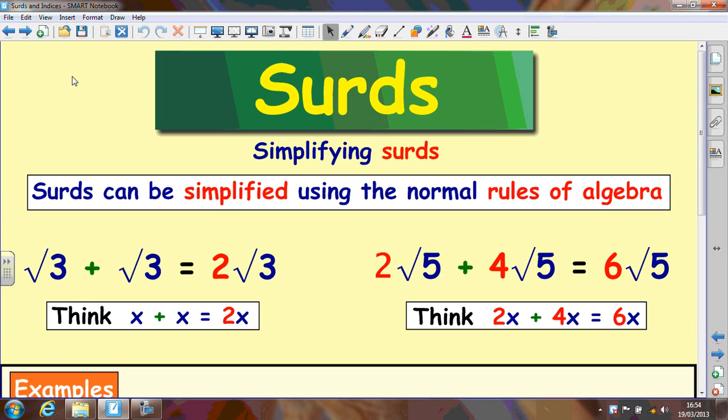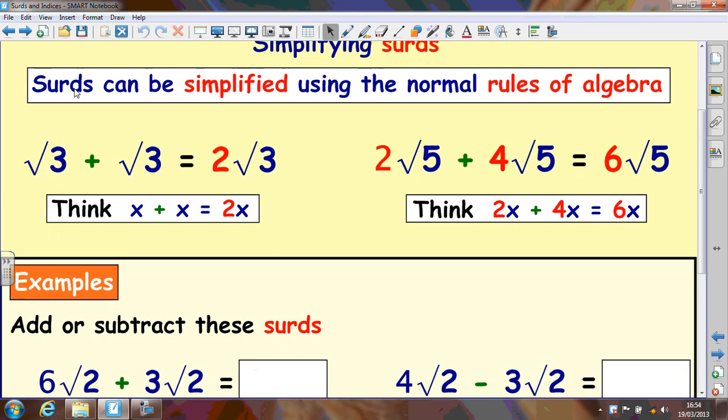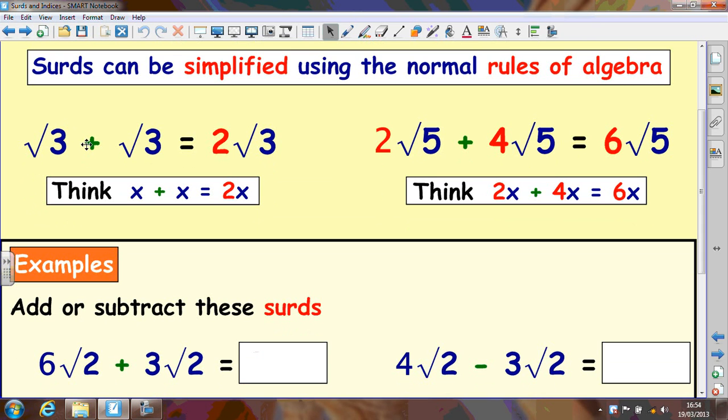So let's look at the operations you can do with surds. Surds can be simplified and that's one of the main things you'll be asked to do at this level. And when you simplify them the easiest thing to think about is algebra. So here we have the square root of 3 plus the square root of 3 which is root 3 plus root 3. You think of how many root 3s we have. You've got two of them because you've added one and one and that's the way you write it. Think of it like x plus x equals 2x. So root 3 plus root 3 equals 2 root 3.